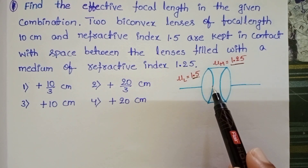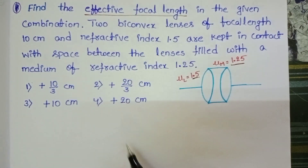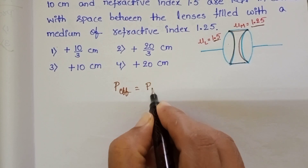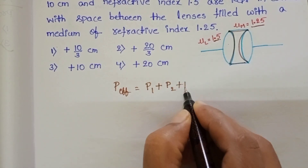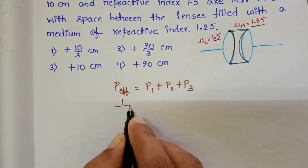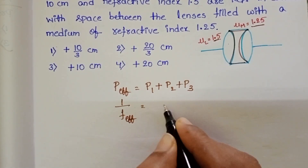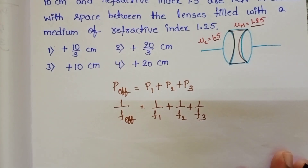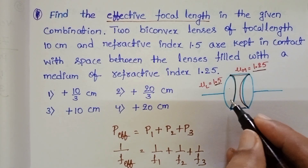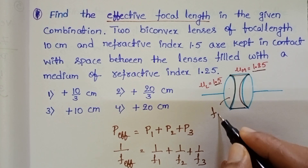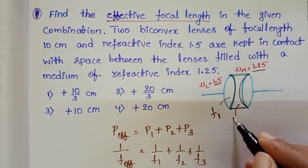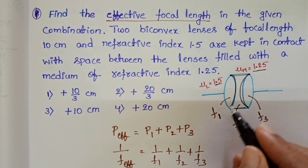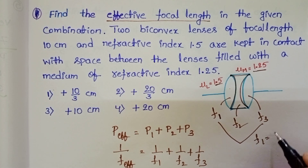In this question we have to find the effective focal length. The effective power of the lens equals the sum of the powers of three lenses. So the effective focal length is given by 1/f = 1/f1 + 1/f2 + 1/f3. The given lenses are biconvex lenses. The focal length of the first convex lens is f1, the concave lens f2, and the third biconvex lens f3. So it is clear that f1 equals f3.